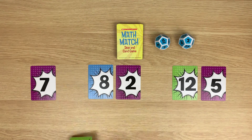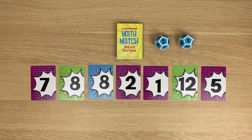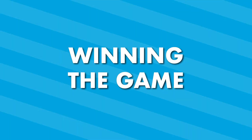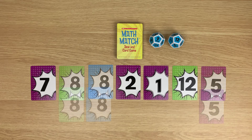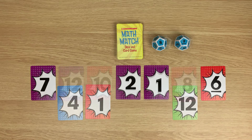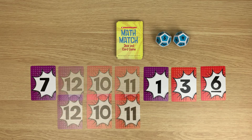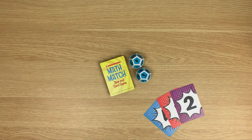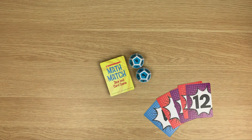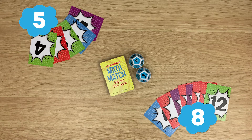Before the next turn, players replenish the number cards in the middle of the table back to seven cards. Play continues to the left for five rounds, with players rolling the dice and collecting number cards based on their solutions. At the end of five rounds, players count their number cards — one point per card. The player with the most number cards wins.